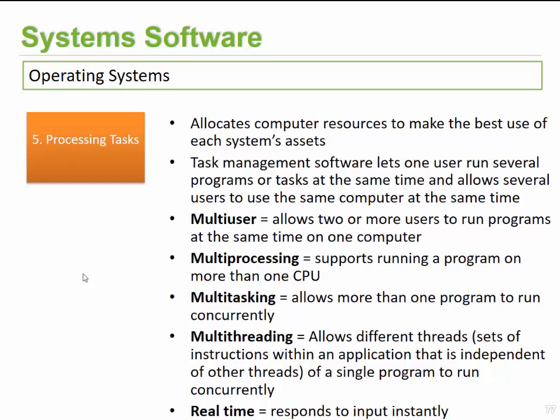Processing tasks enable the computer to function more efficiently by executing multiple tasks at the same time. With task management, we can have multiple applications open and easily jump between them and send information between them. This allows people to run programs simultaneously, and even for multiple people to share computers — for example, in a home environment where you log in, do your work, log out, and the next person does their activities, and when you return your information is preserved.